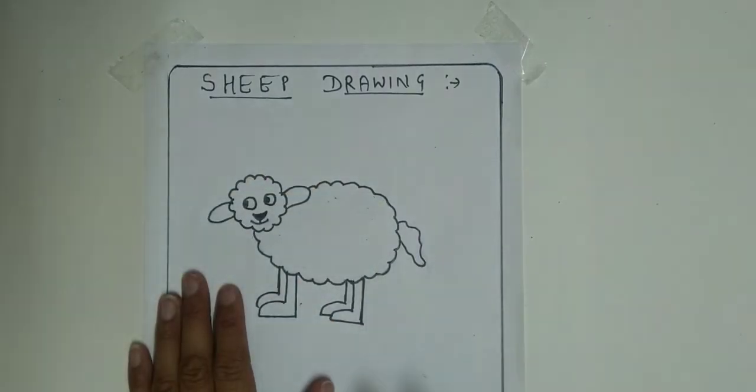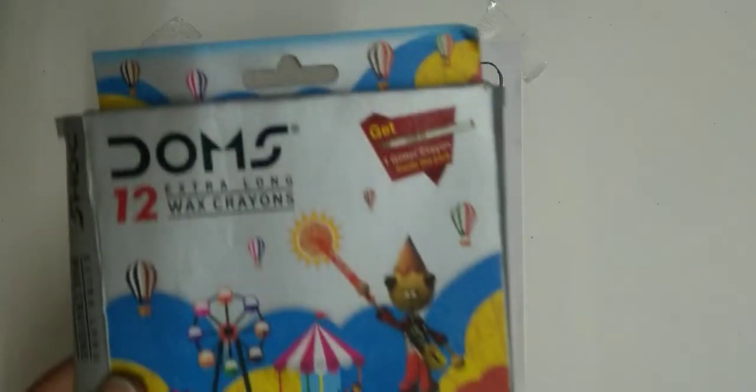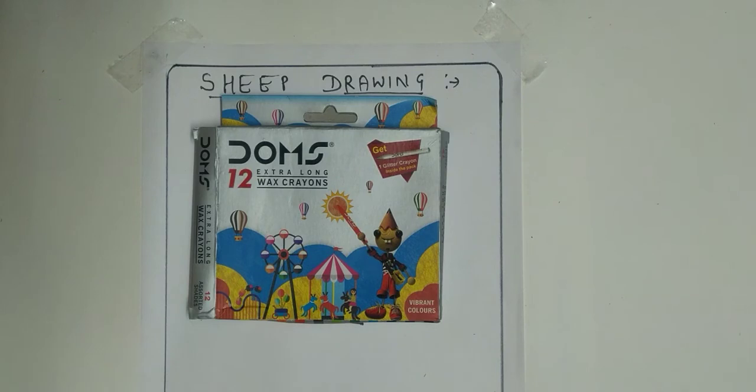When you erase all extra lines of the drawing, your sheep sketch is ready. Now, I am going to start coloring. I am using these colors. You can use any kind of wax crayons or colored pencils.